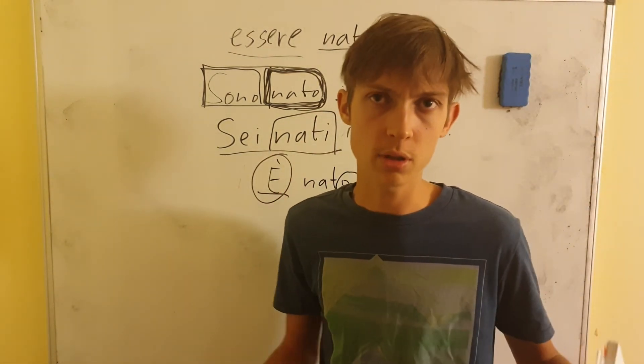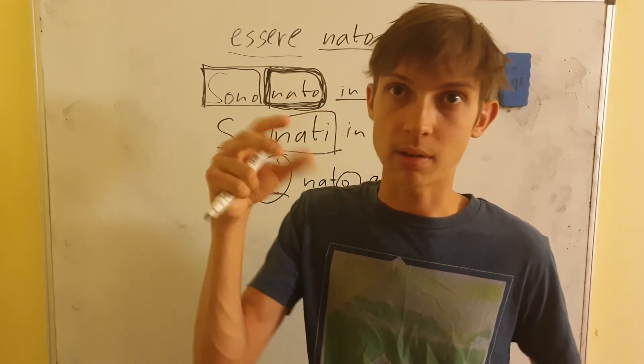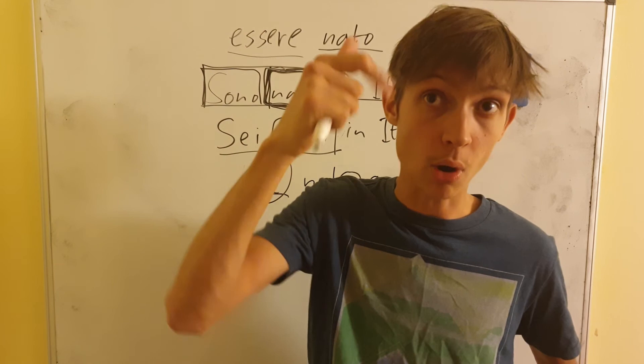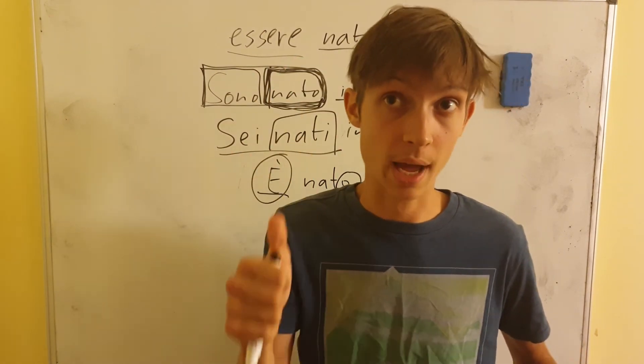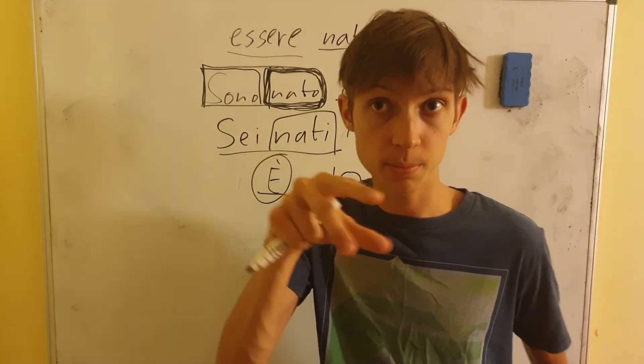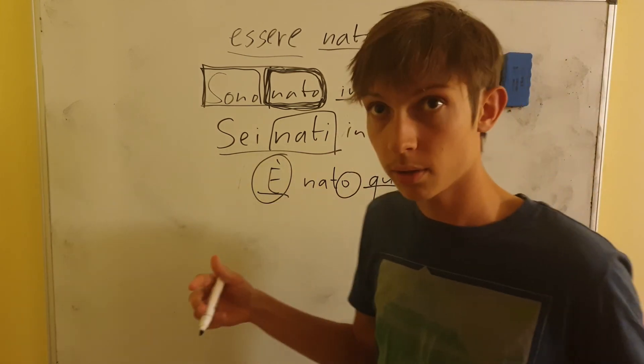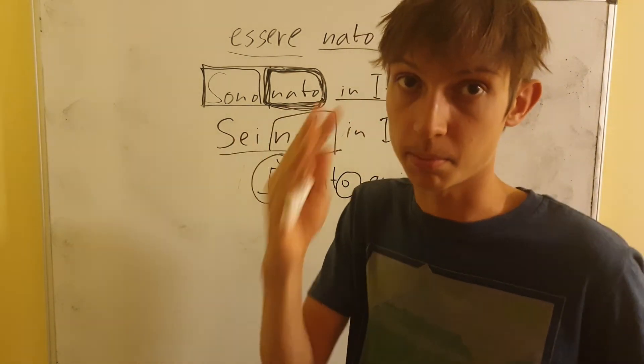With Italian, just like in many other European languages, the helping word for past participle and for these present perfect things is either be or have, either be or have. For this one it's be, for other verbs it's gonna be have. But for born or being born, it's be.